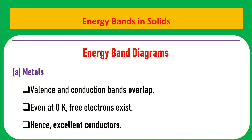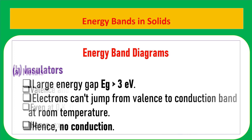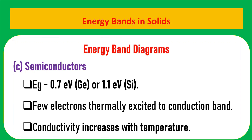In the energy band diagram for metals, the valence and conduction bands overlap even at zero kelvin, so free electrons exist and metals are excellent conductors. In insulators, the energy gap is very large (greater than 3 eV), so electrons cannot jump from the valence band to the conduction band at room temperature, and there is no conduction. For semiconductors, the energy gap is 0.7 eV for germanium and 1.1 eV for silicon — this is very important and frequently asked in exams. A few electrons are thermally excited to the conduction band, so conductivity increases with temperature.